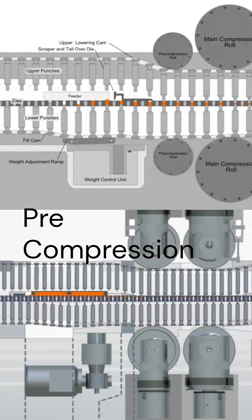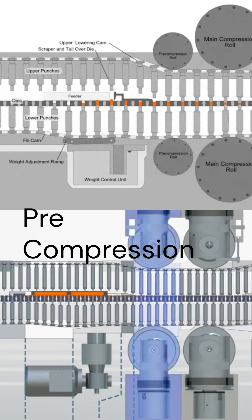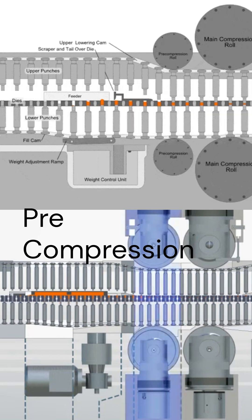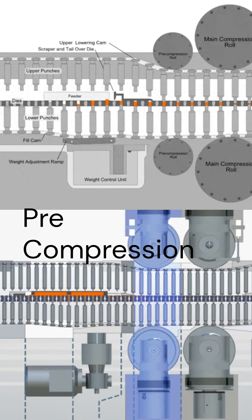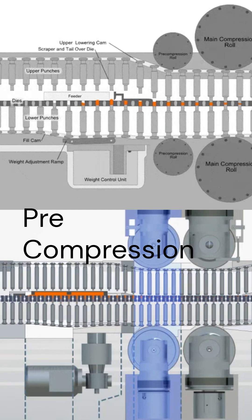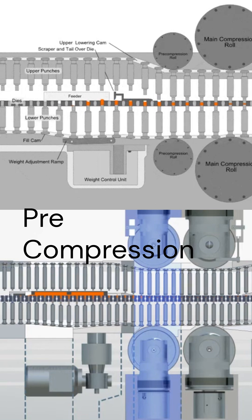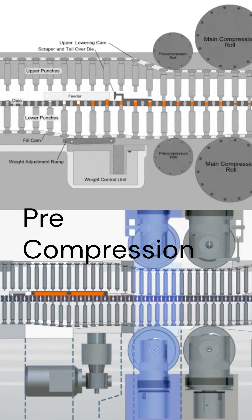The pre-compression has two main purposes: removing the air from the powder bed and rearranging the particles, and extending the time during which the material is under compression in order to allow plastic materials to flow.